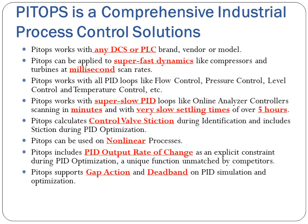PyTops works with any DCS or PLC brand, vendor, or model. It can be applied to super-fast dynamics like compressors and turbines at millisecond scan rates, and works with all PID loops — flow control, pressure control, level control, temperature control, etc. PyTops also works with super-slow PID loops like online analyzer controllers scanning in minutes, with very slow settling times of over 5 hours. It calculates control valve stiction during identification and includes stiction during PID optimization. PyTops can be used on non-linear processes and includes PID output rate of change as an explicit constraint during PID optimization — a unique function unmatched by competitors. It also supports gap action and deadband PID simulation and optimization.